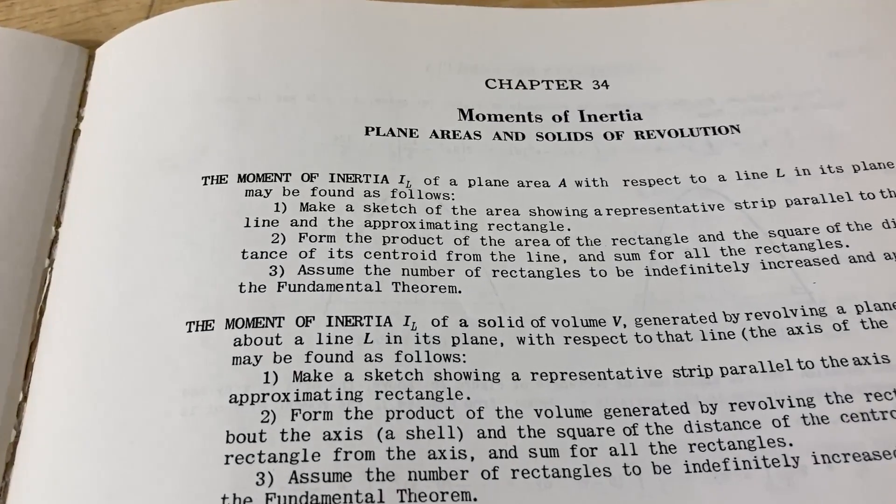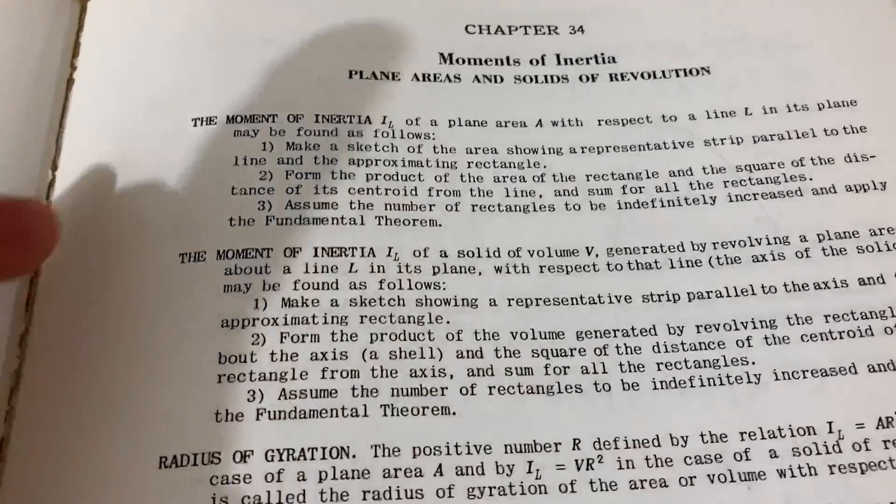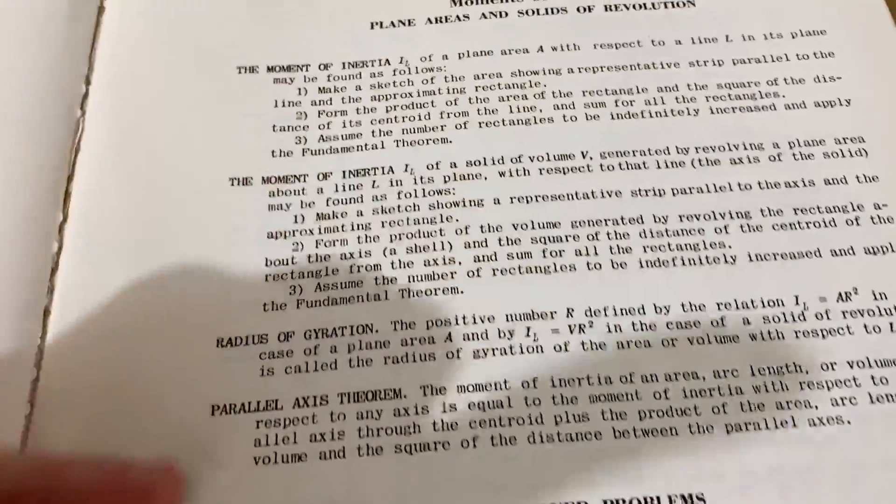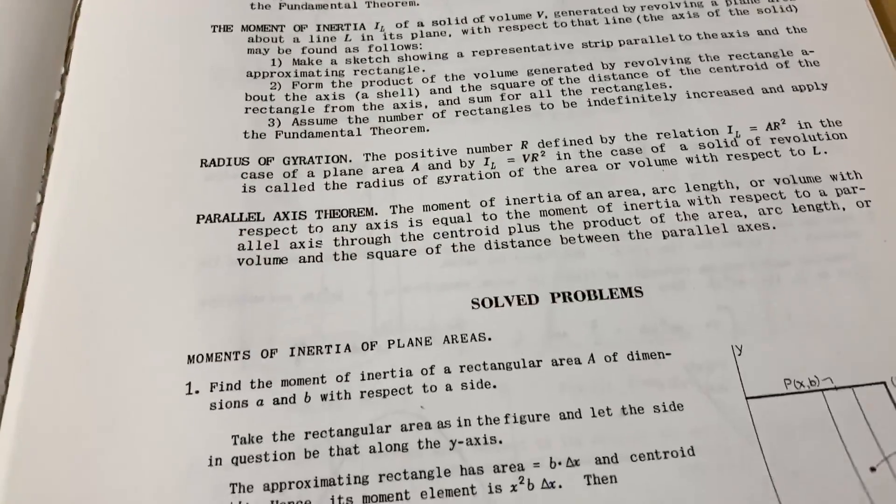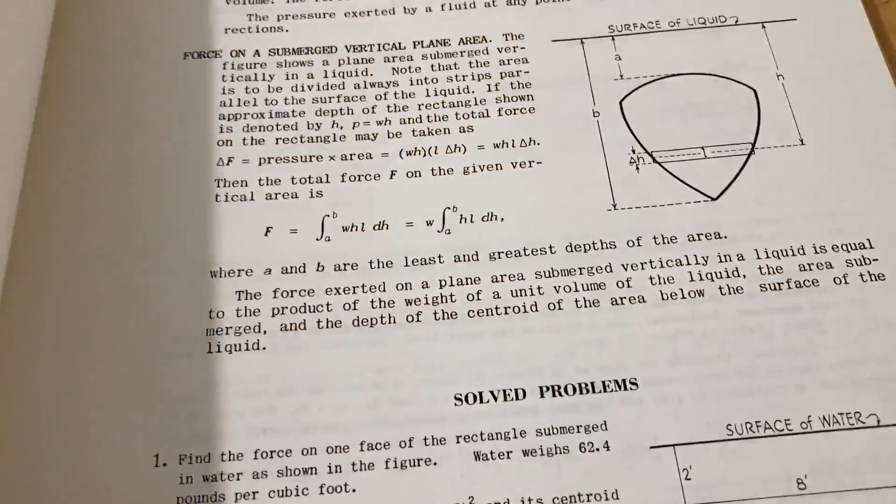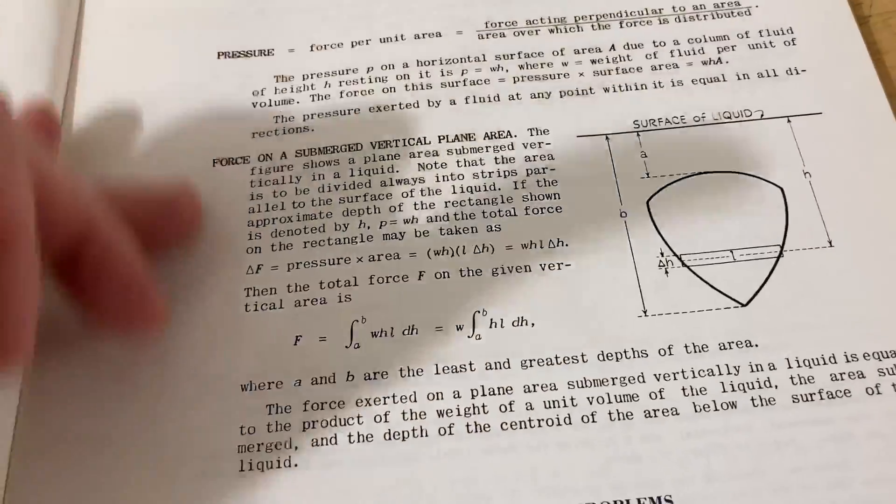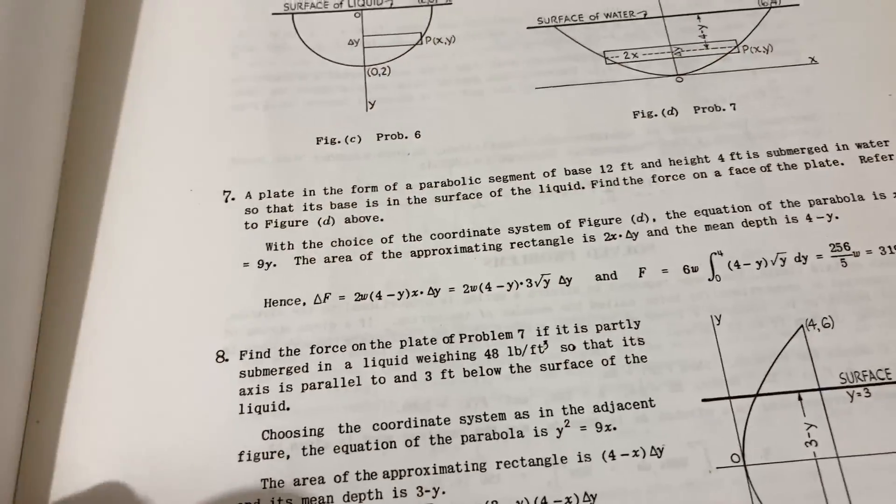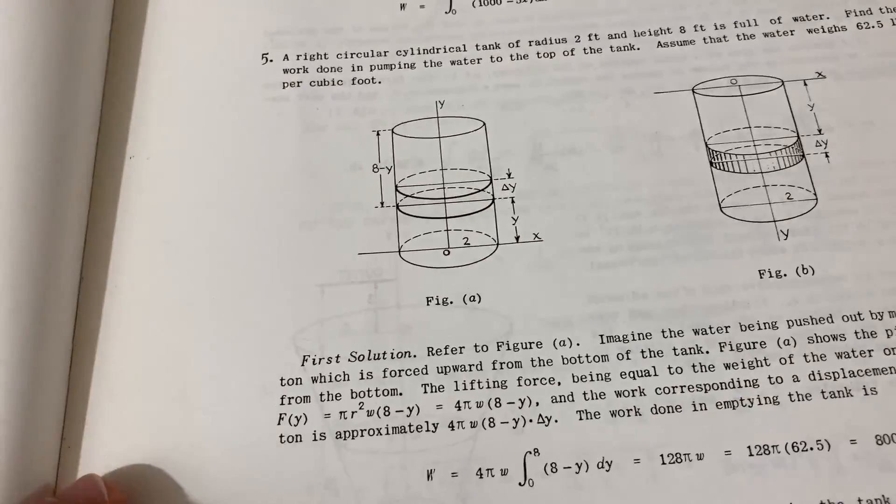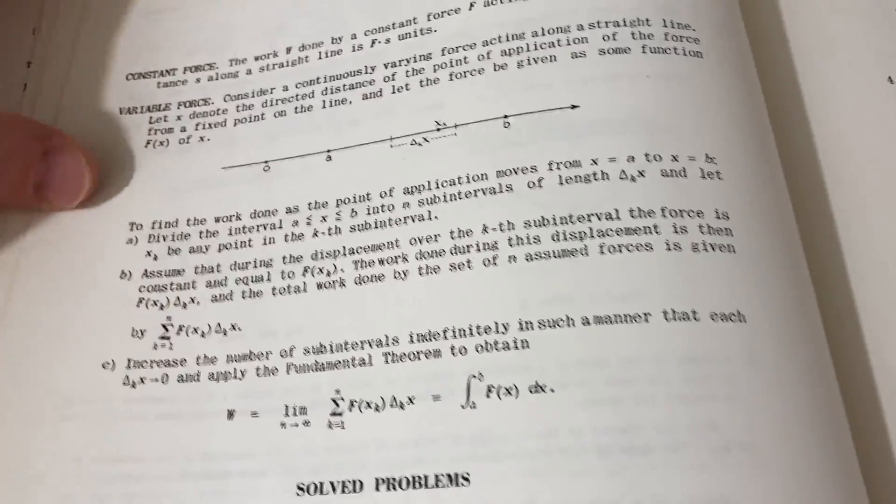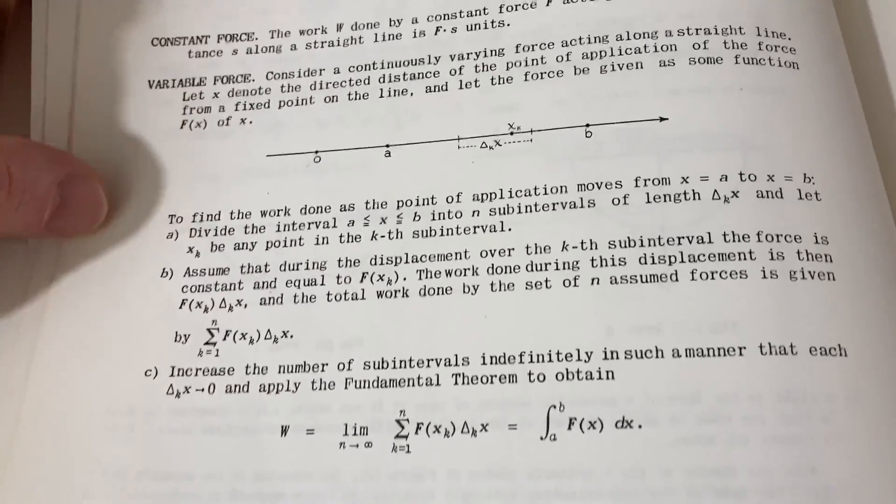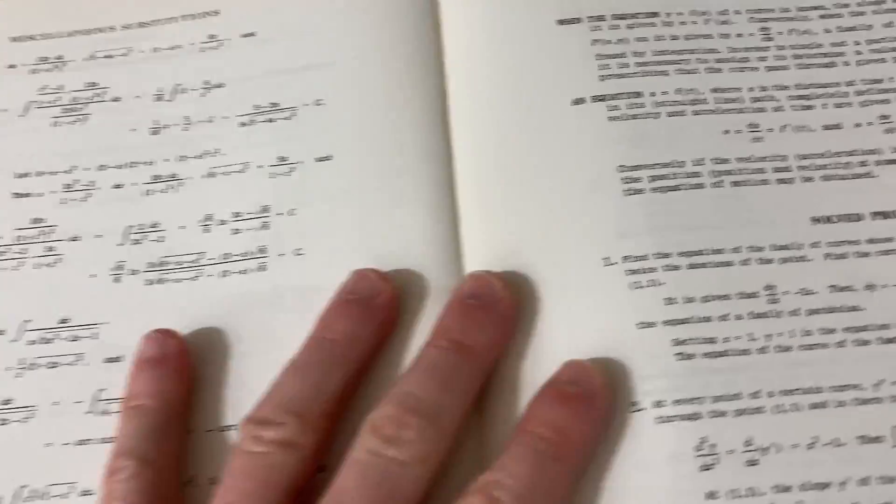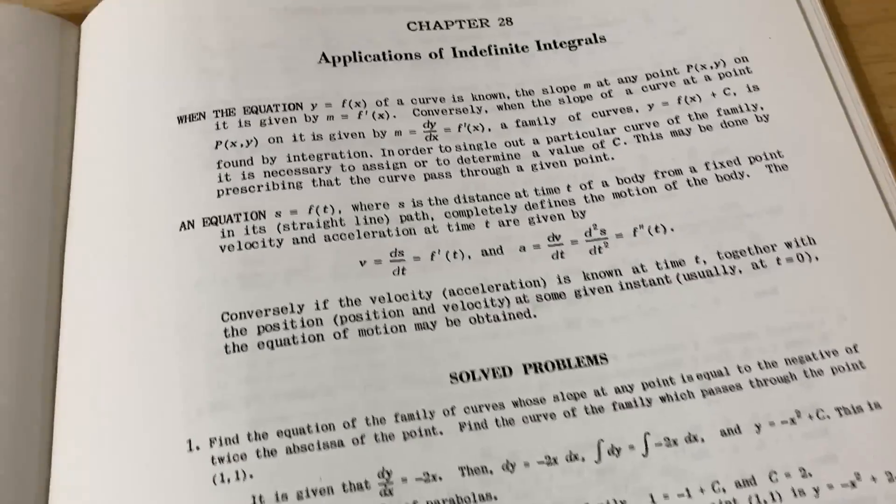I feel like this Schaum's compared to other Schaum's is not as wordy. This is a chapter 34 on moments of inertia. So this is all you have. And then it just jumps into it. Let's look at another chapter so you can see what I mean. So like fluid pressure, and then it jumps into the problems right away. So there's not much in the way of lots of reading. Work, same thing. You just go straight to the solved problem. So it's very, very concise.